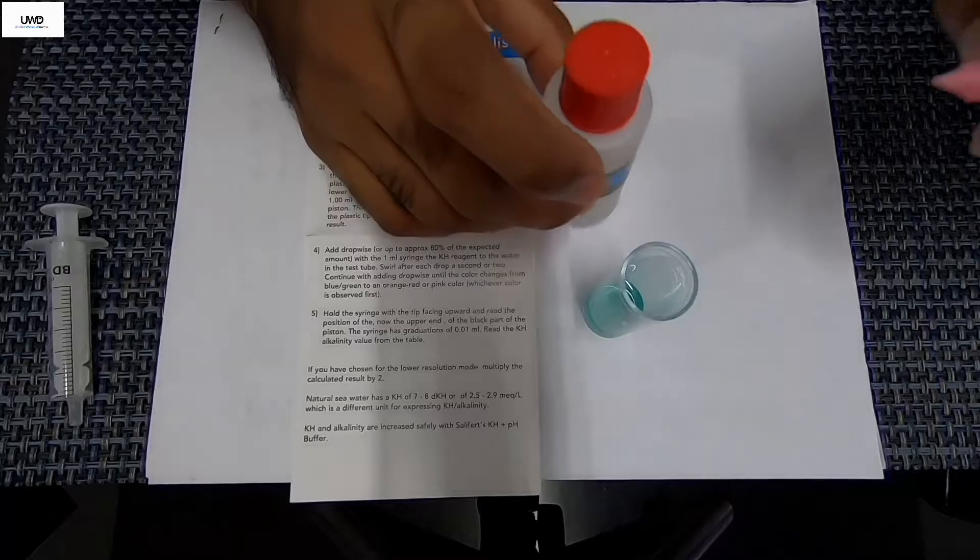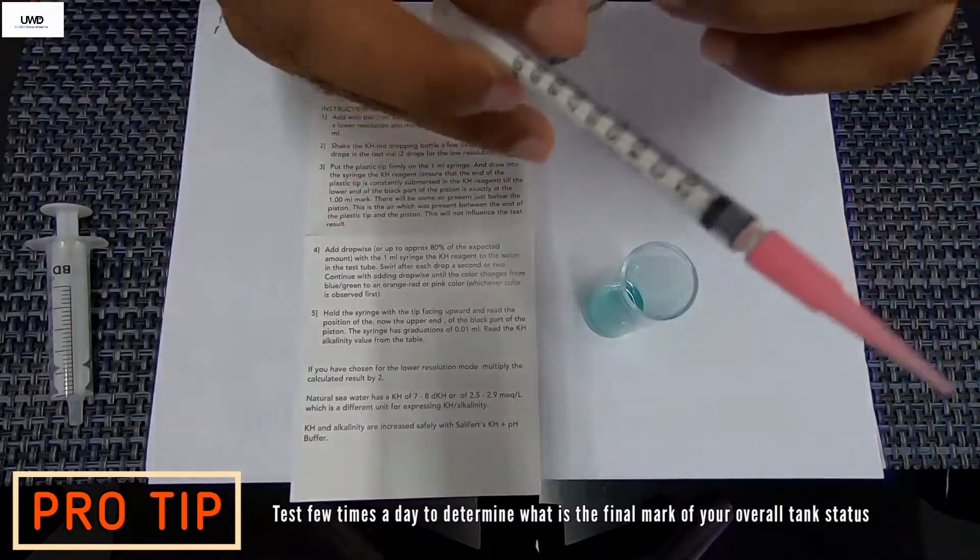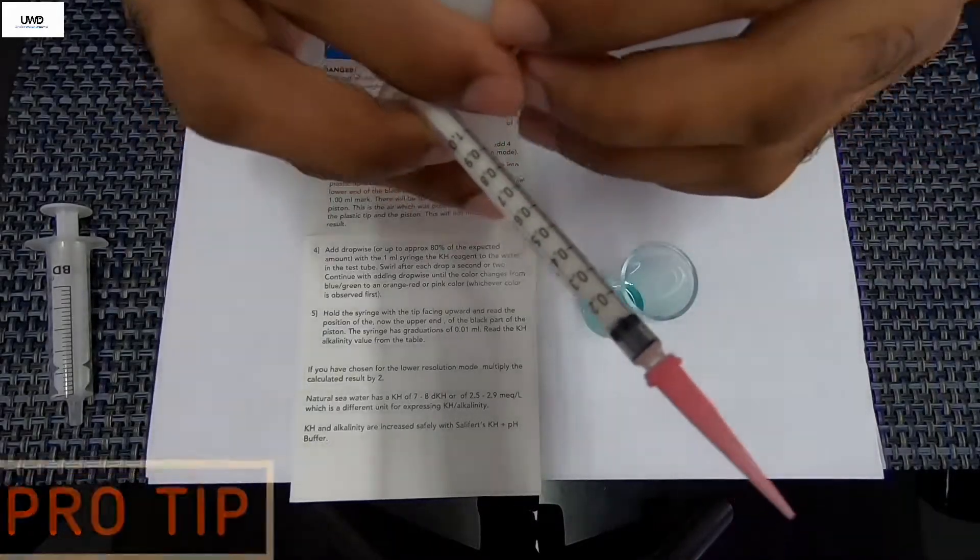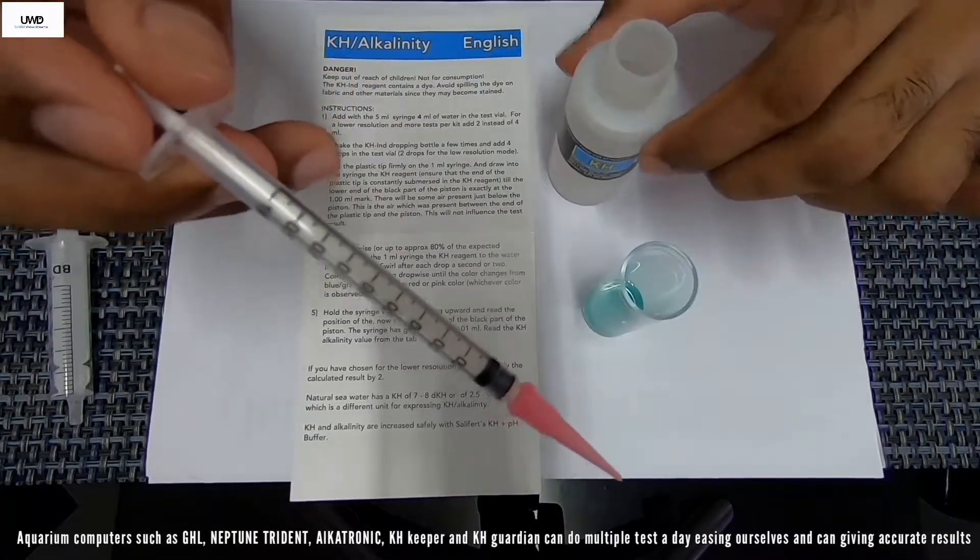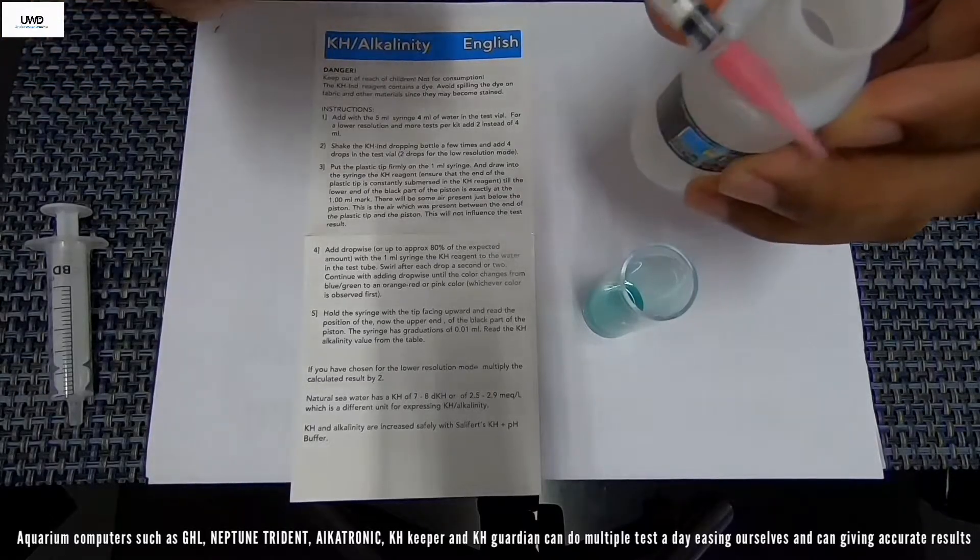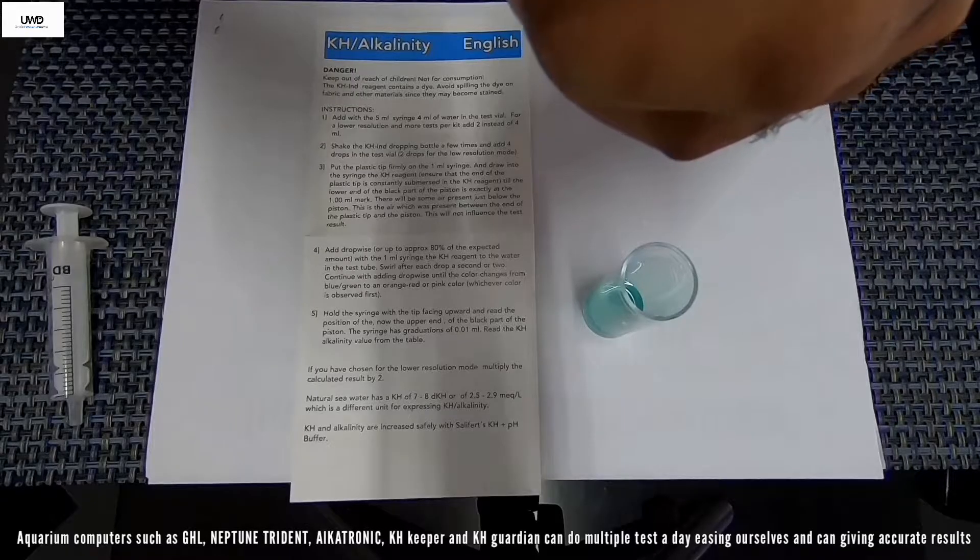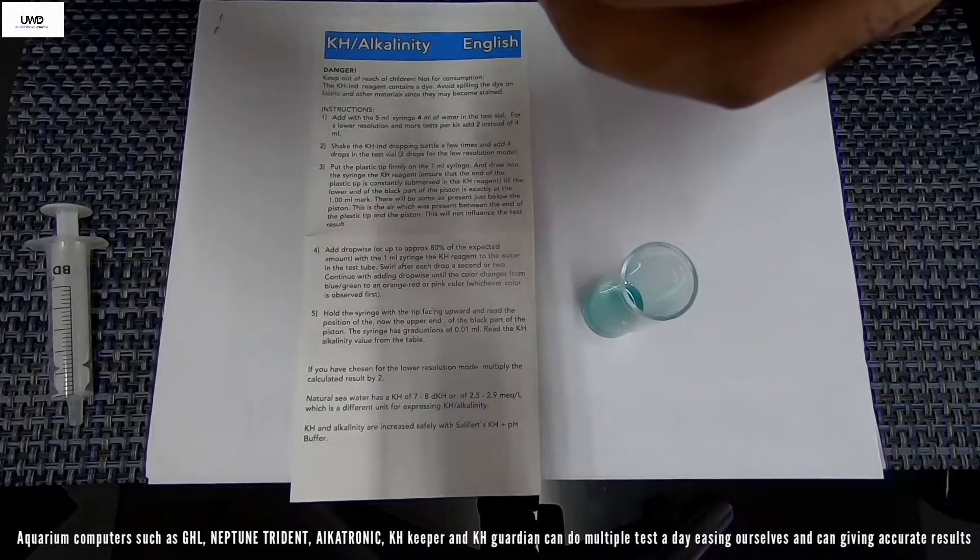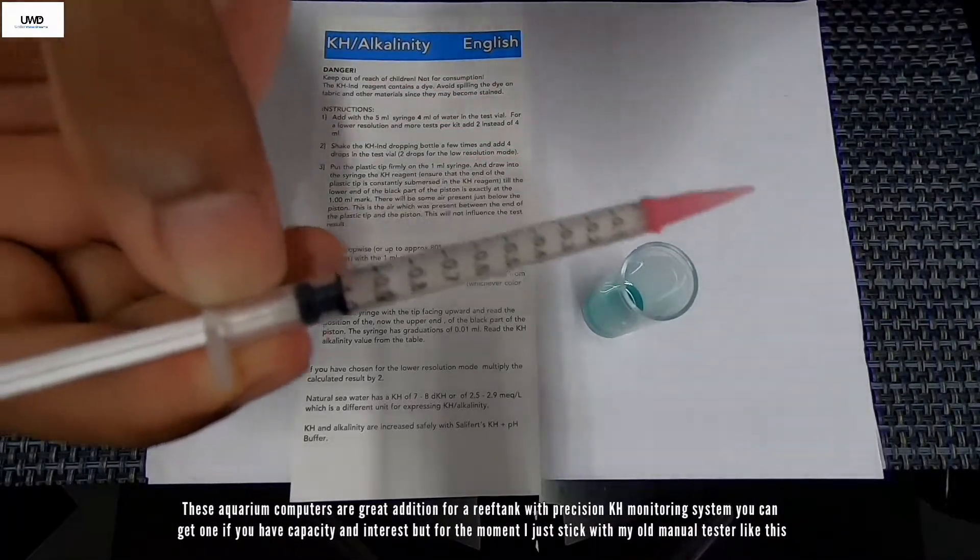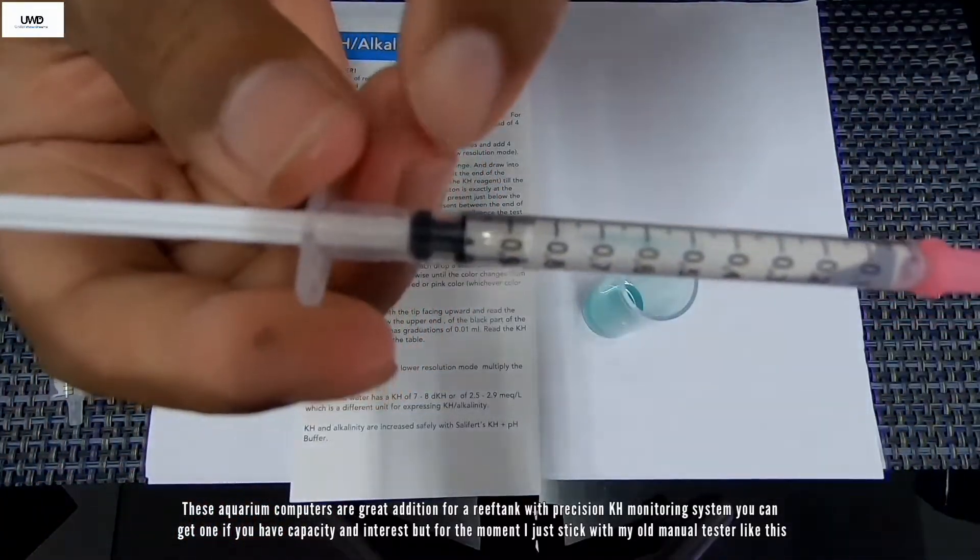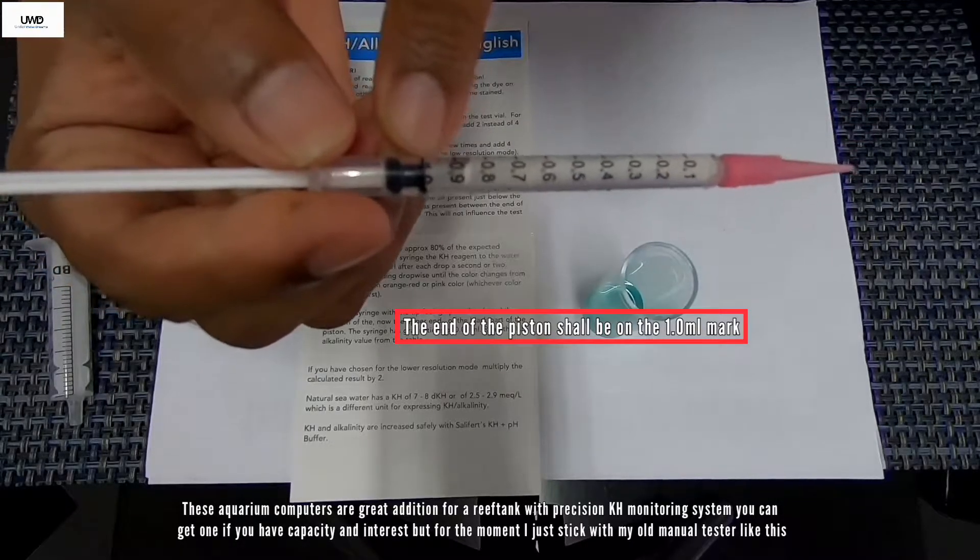The last part is using this reagent, the 1ml syringe, the thinner one. What you're going to do is draw this reagent inside this syringe until the 1ml mark. And remember to draw this liquid, that's a trick. And always grip this container very tightly. Put aside the reagent.